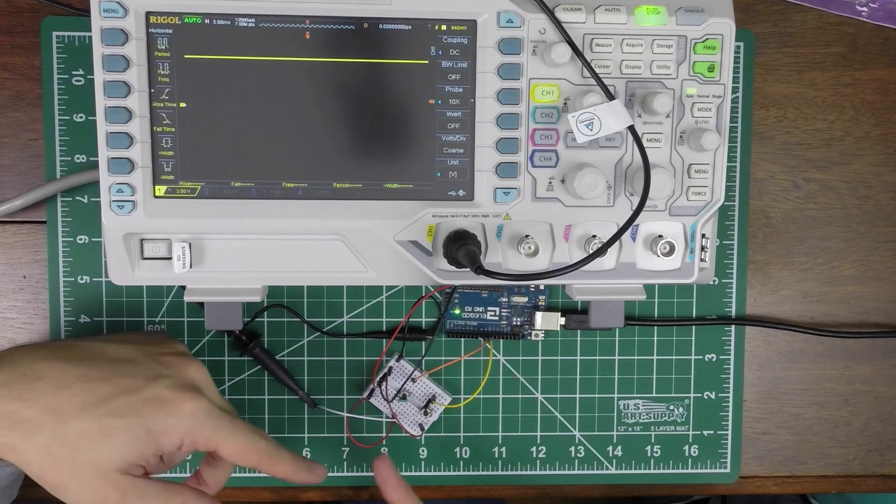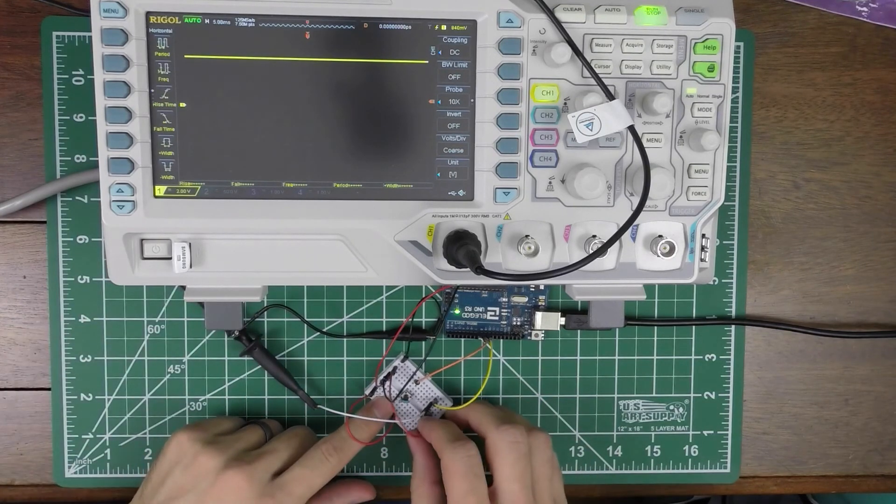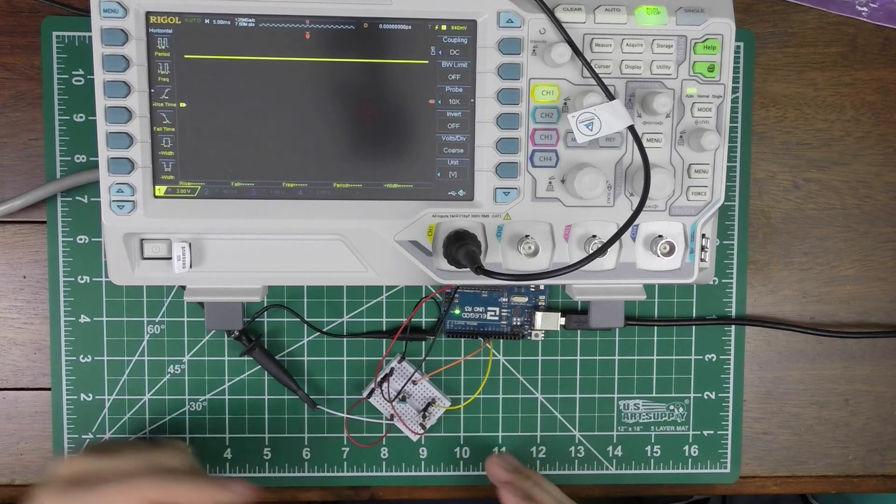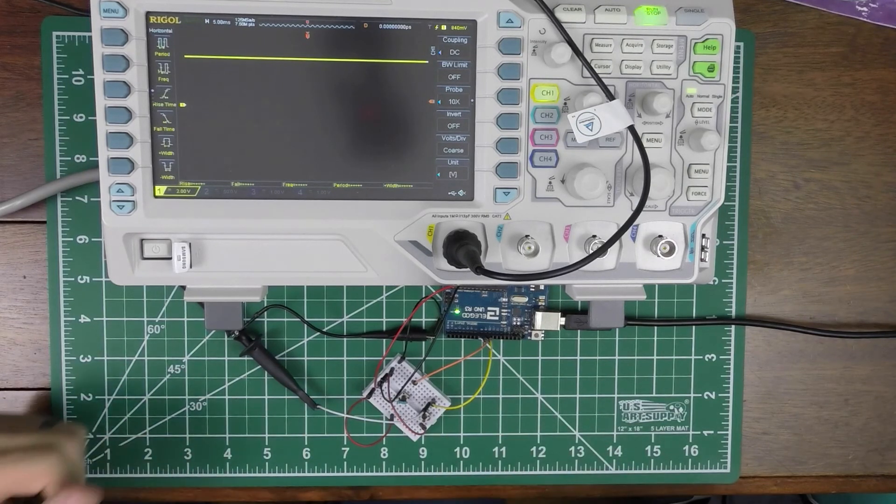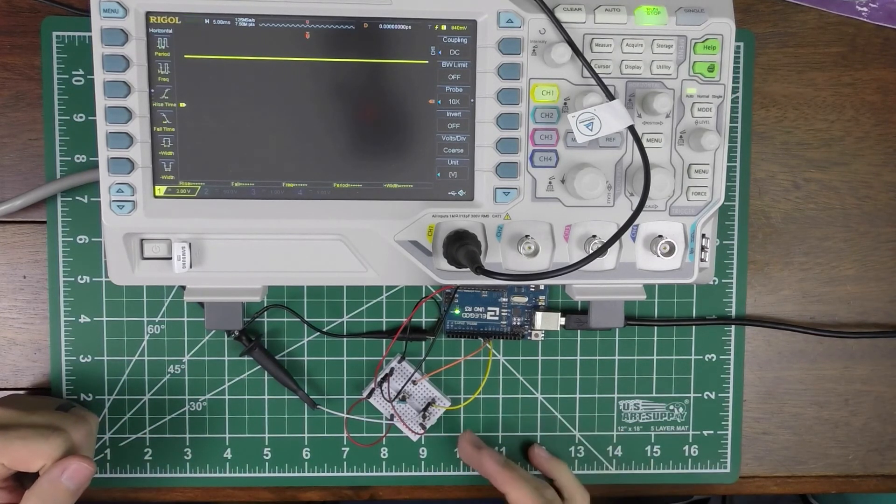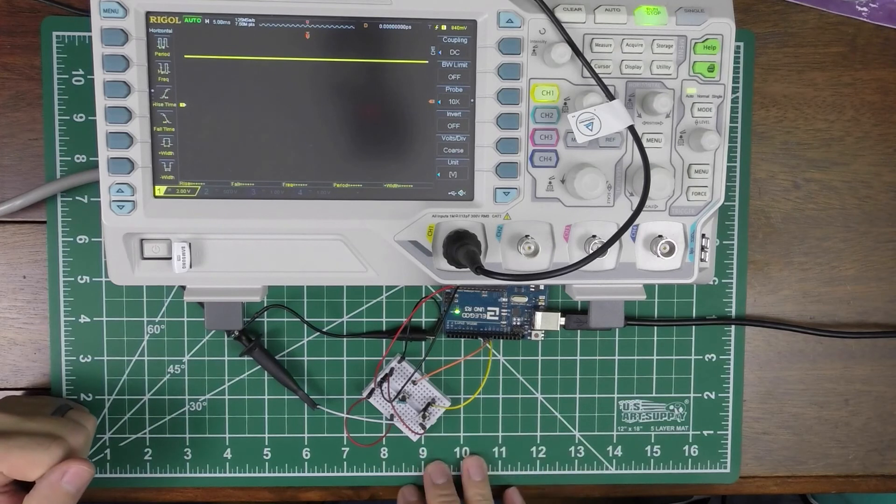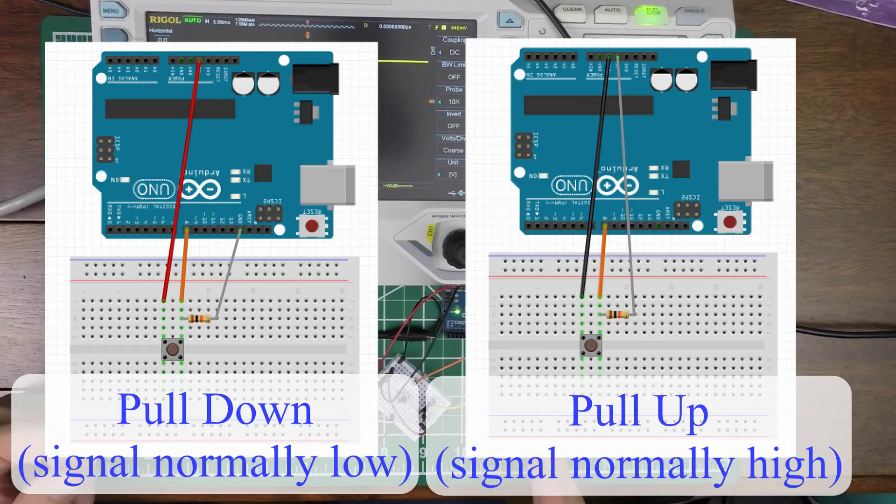So here I have a pull-up resistor. The first case I had a pull-down resistor. It's really just up to the user. Sometimes it depends on what you're doing. If you're getting some sort of signal, you might want a high or low. But it's really up to you to decide whether you want to pull down or pull up.